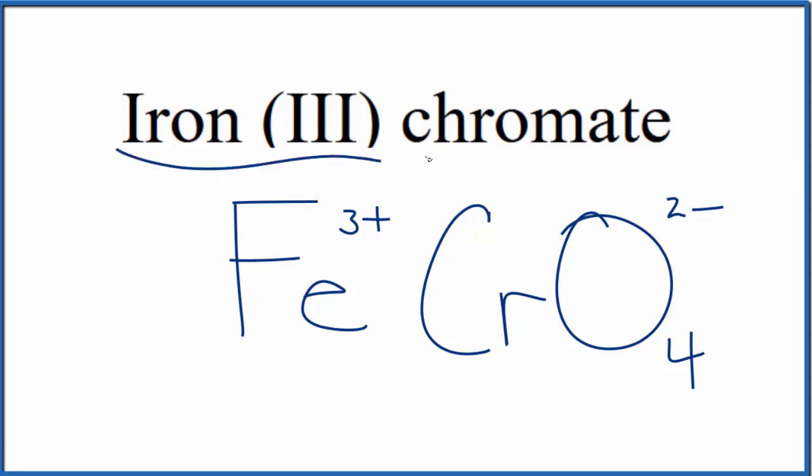Since iron's a transition metal and chromate is a polyatomic ion, these charges need to add up to zero, giving us a net charge of zero.